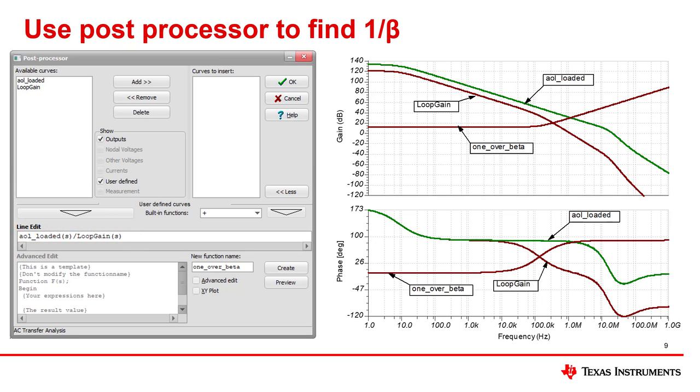Looking at the resultant graph, you can see that 1 over beta has a zero at approximately 100 kHz. Showing 1 over beta can help you better understand what the stability concern is, so it may be worthwhile to generate the curve. Technically, to find phase margin, you only need the loop gain curve.